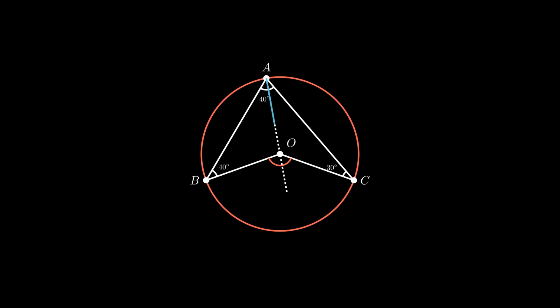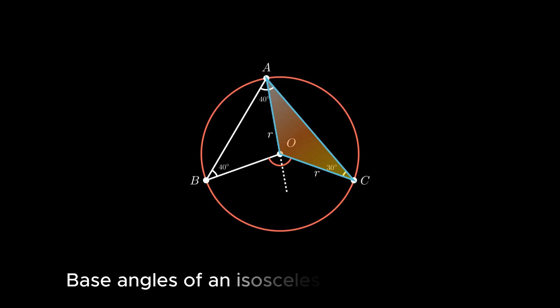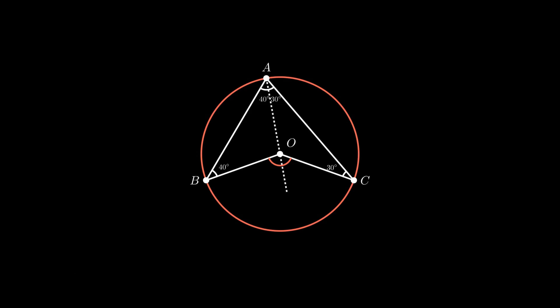Similarly, in triangle AOC, sides AO and OC are radii, thus triangle AOC is also an isosceles triangle. As base angles of an isosceles triangle are equal, therefore we conclude angle CAO equals 30 degrees. Now from the figure, angle BAC is the sum of angle BAO and angle CAO, thus angle BAC equals 70 degrees.